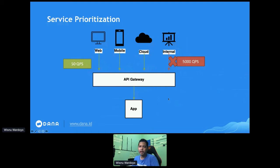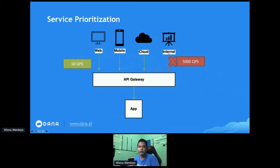The API Gateway should be able to perform service prioritization because in some cases, traffic from a partner or system could increase significantly and cause system overload. It's not only about device type — you can also perform prioritization for certain types of partners or users. For example, premium users or premium partners may be able to access a higher QPS than regular ones.